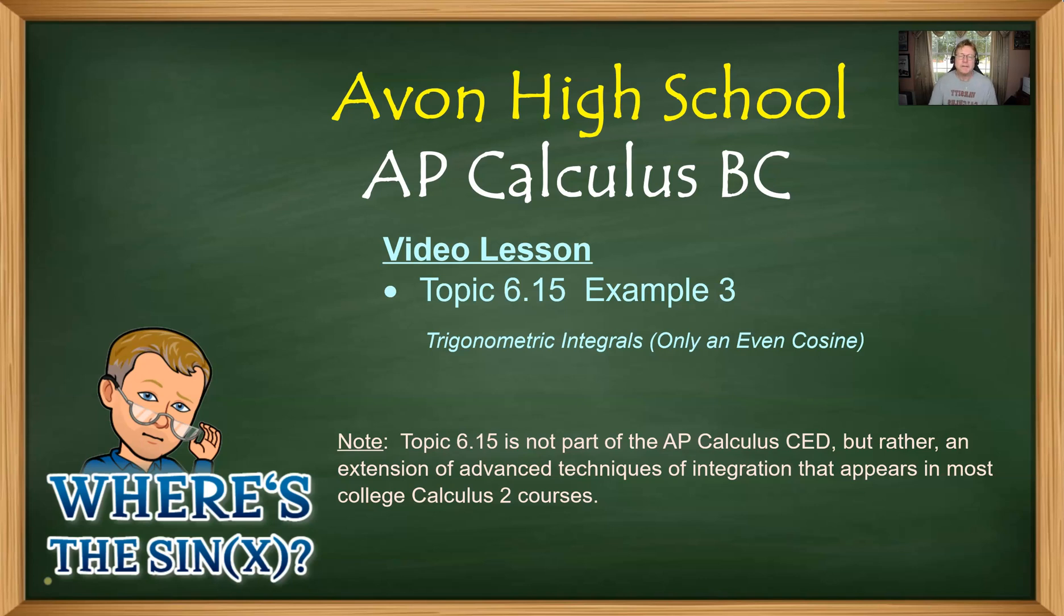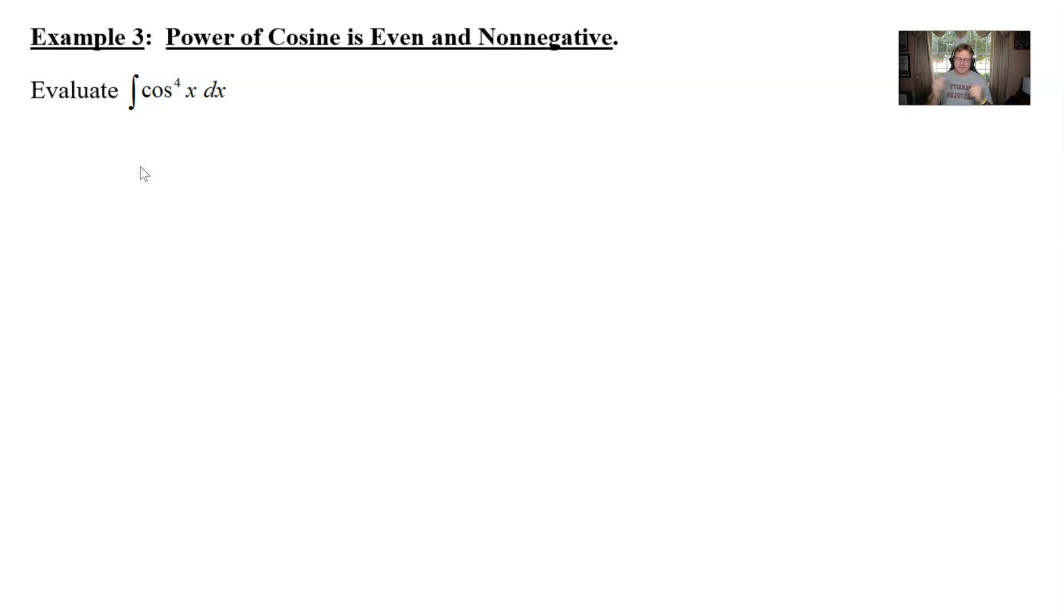Welcome back my AP Calc BC friends. We're going to take a look at example three now from our fictitious topic 6.15. We're still knee-deep in this idea of evaluating a trigonometric integral, focusing on the ones that involve sine and cosine. We're going to take a bit of a detour with this example. I've entitled this one where's the sine? Where's the sine? Is it gone? Well let's take a look at what this example is.